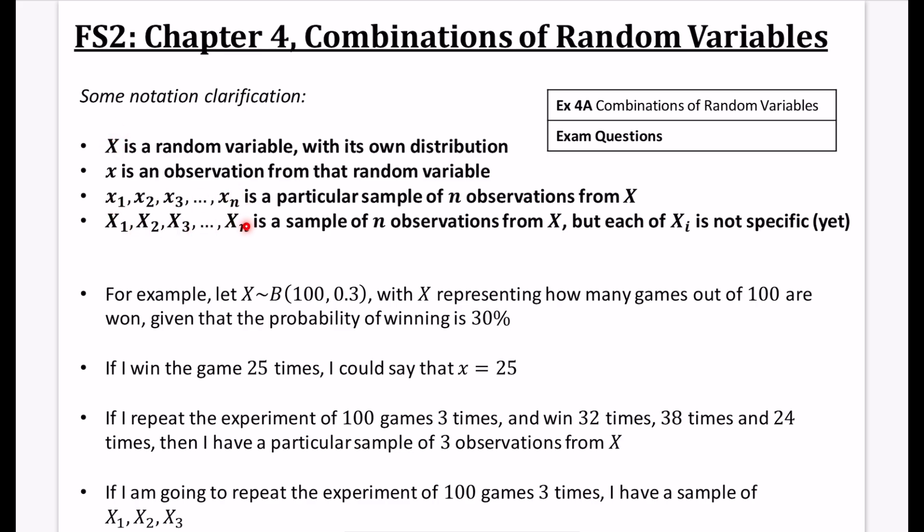Whereas when they become capital letters like this one, X1, X2, X3 up to Xn, this is a sample of n observations from X, but each of Xi is not specific yet. So in this case, these could all be particular numbers, whereas the sample of things that we've got here, they are going to be a sample. They haven't actually been selected as particular values yet. We're just saying that they will be selections from it, which is why we're using that kind of capital letter to describe it.